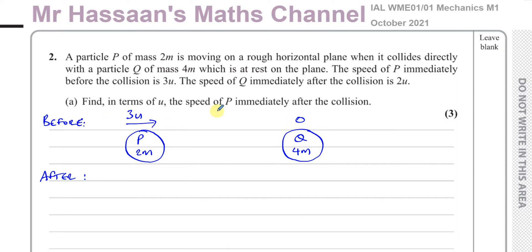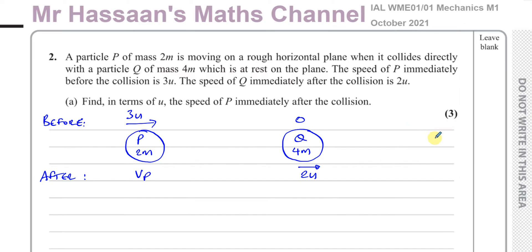On the top I'll write what's happening before the collision, and underneath what's happening after. Before the collision, Q is at rest, so its velocity is zero. P's velocity is 3u to the right. After the collision, we have to find the speed of P — I'll call it vP. Q is moving at a speed of 2u in the same direction P was originally moving.